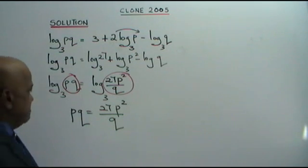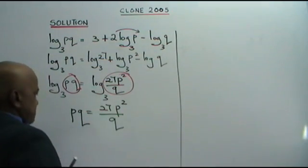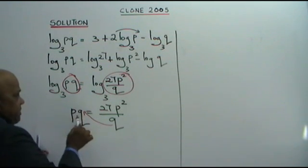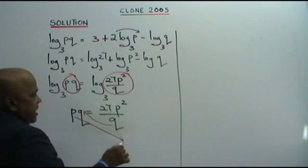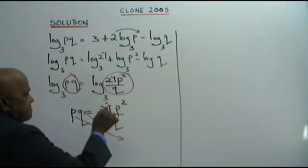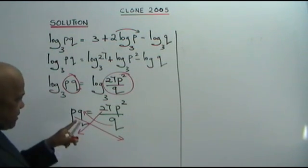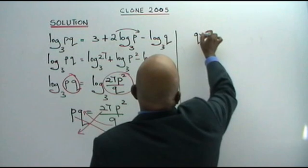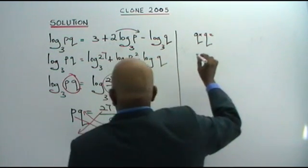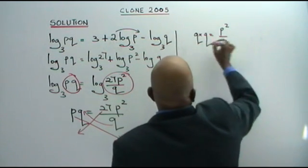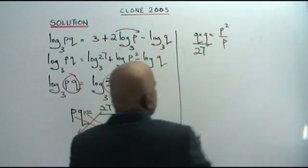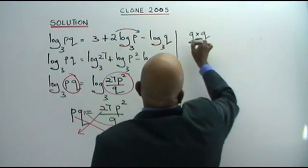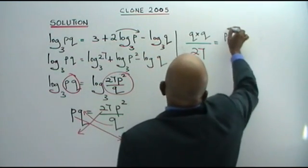Now the next step — watch very carefully. Q goes up here, you multiply with this. P comes down here. 27 comes down here. Follow the arrows. So you get Q times Q over 27 equals P squared over P.